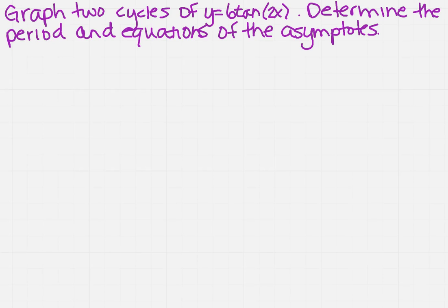We want to graph two cycles of y equals 6 tangent of 2x. And then we need to determine the period and the equations of the asymptotes. So now how are we going to go about doing that?